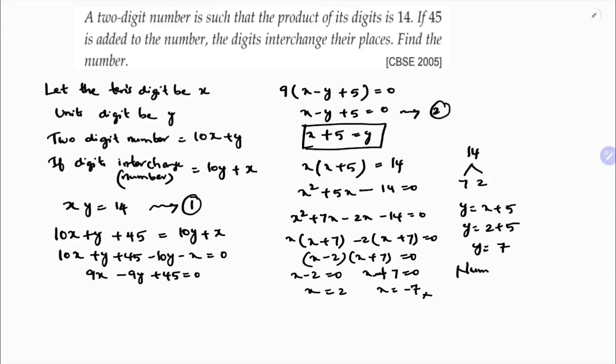Therefore, the number is 10x plus y. 10 into 2 plus 7, 20 plus 7, 27. So the number is 27.